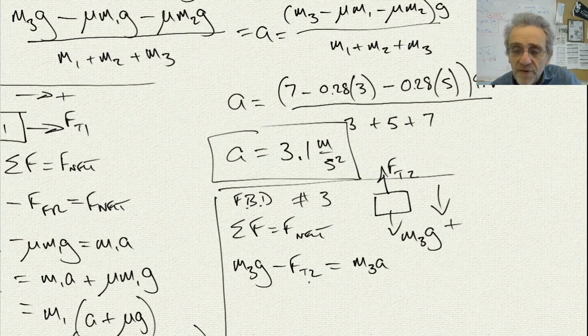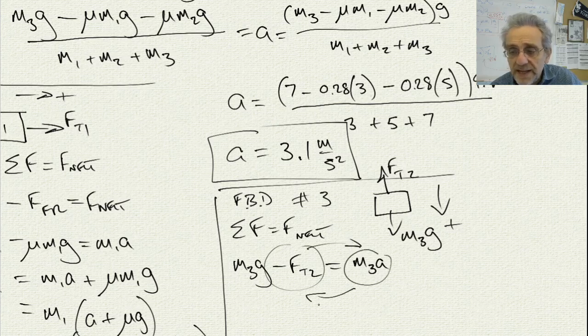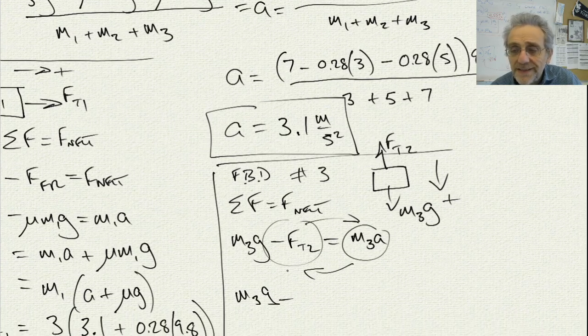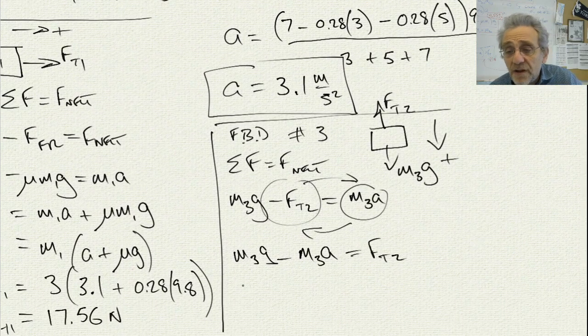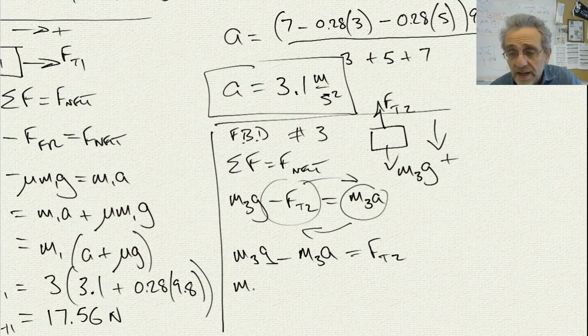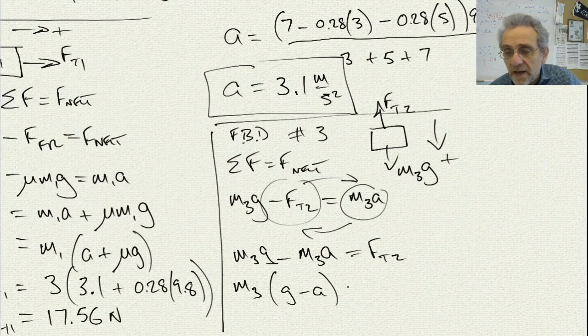And so, now, if I'm solving for FT2, I'm simply going to take this term to the other side, and I'll take this term to that side, and I'll get an answer of M3G minus M3A equals FT2. And now I can factor out M3, and I'll get M3G minus A, and I will get FT2 for that.